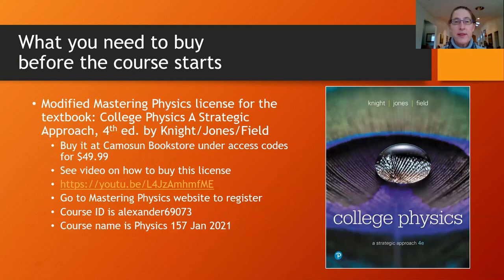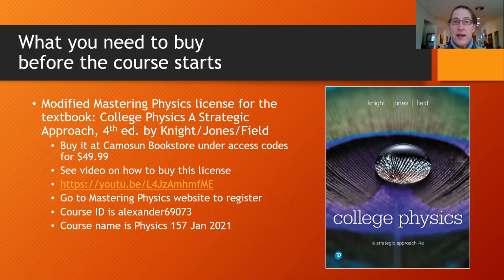We will be using Mastering Physics and you do have to buy a license for that — it is a mandatory license. It costs $49.99, and that's actually a good deal; the price has come down from $75. On that website where you will be doing your actual homework, there are also an enormous number of resources, videos, and other instructors doing problems. You can watch a video I've made — the link is here — on how to buy your license at the Camosun bookstore.